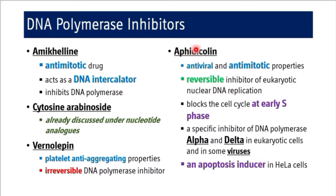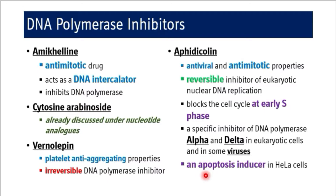Next is afidicholine, which has antiviral and anti-myelotic properties. It is a reversible inhibitor of eukaryotic nuclear DNA replication and blocks the cell cycle at the early synthesis phase. It acts as a specific inhibitor of DNA polymerase alpha and DNA polymerase delta in eukaryotic cells, and also in some viruses. In molecular biology, it has a very important role as an apoptosis inducer in HeLa cells.